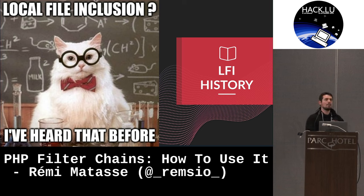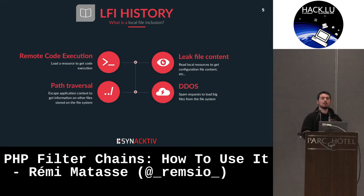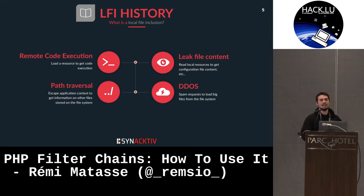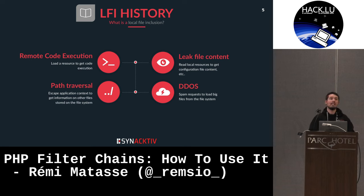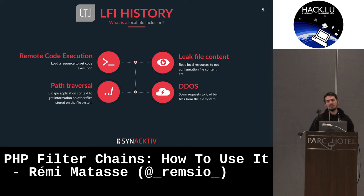Local file inclusion — most of you have probably heard of this. We can dispatch them into four cases. The first is getting remote code execution by loading a PHP resource from the file system, such as via a file upload. You can also leak file content, like the application source — for PHP, that might be index.php. Another technique is path traversal, which allows you to escape the current file system context. The last, less common one is denial of service by loading a huge resource to spike server load.